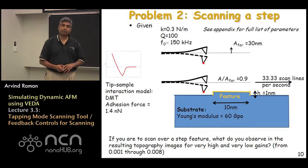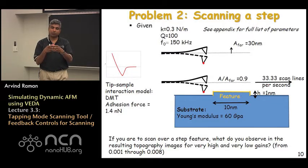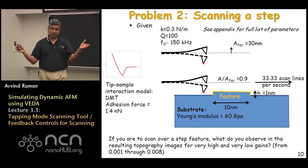A second example that we want to deal with is an example where we have a step. This would, for example, mimic a feature which is more viscoelastic sitting on another substrate on the background.